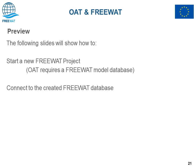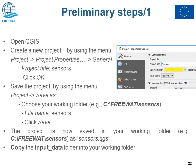To do that, you need to follow the slides step by step. We need to create a new FreeWAT project because OAT saves all created sensors in the FreeWAT model database. Then we need to connect the created FreeWAT database. The preliminary step is to open QGIS, create a new QGIS project under project properties > general, set the title like 'sensor' for example, and save the project.